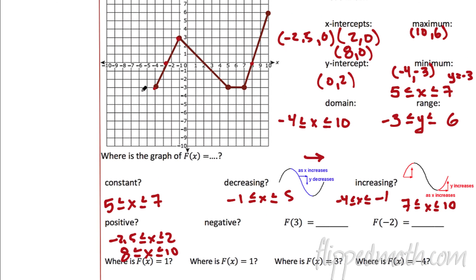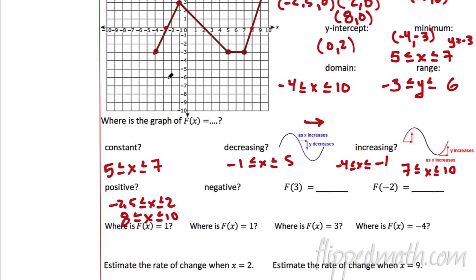Where is the graph negative? That means where is it below the x-axis? That's from negative 4 to negative 2.5. And also from 2 all the way to 8. So those are the two areas where the graph is negative — negative means below the x-axis.